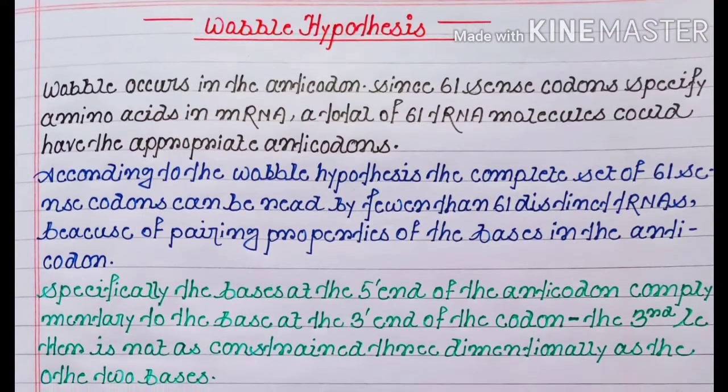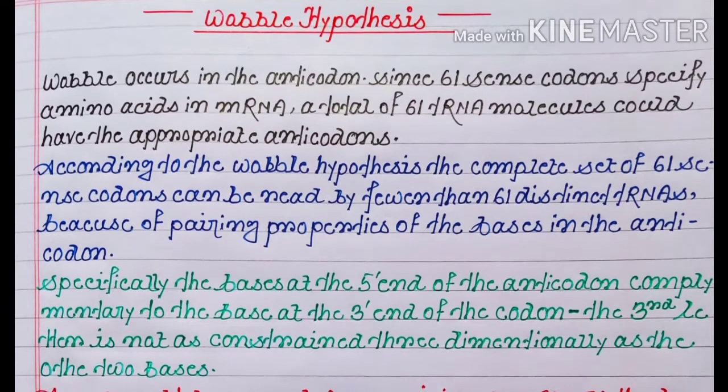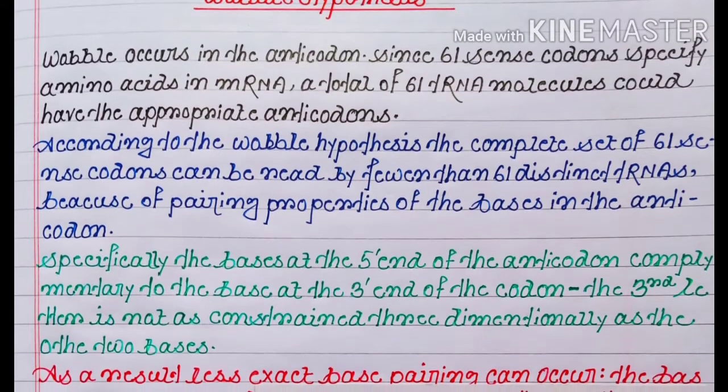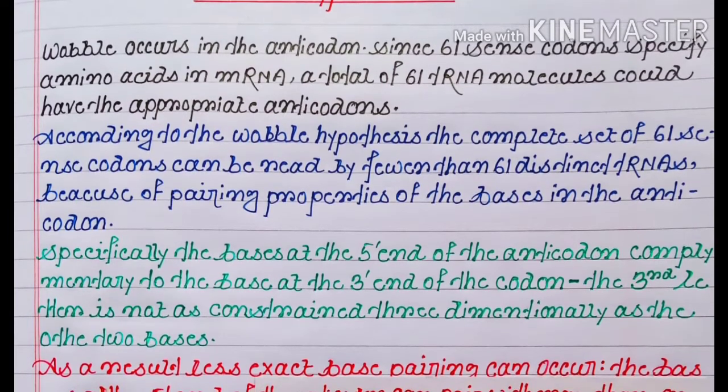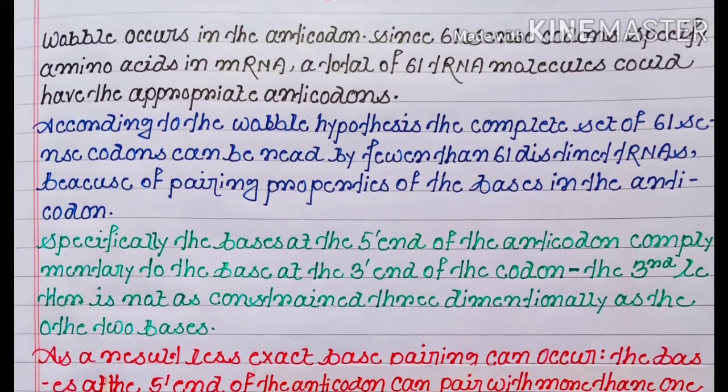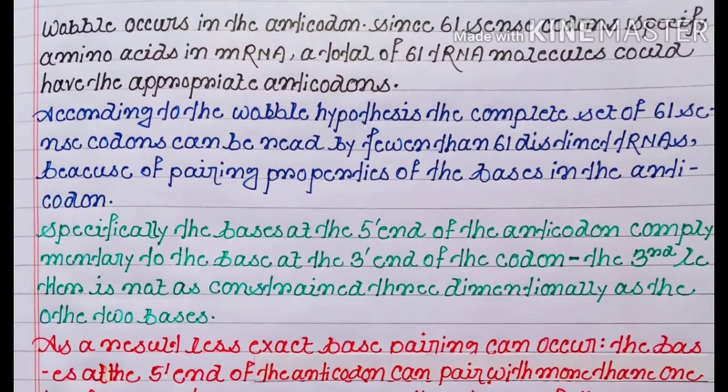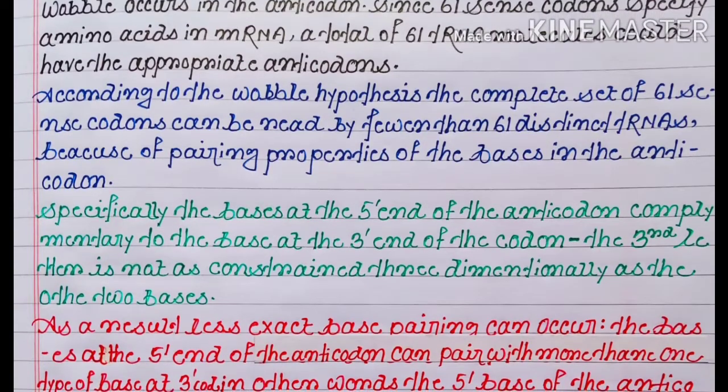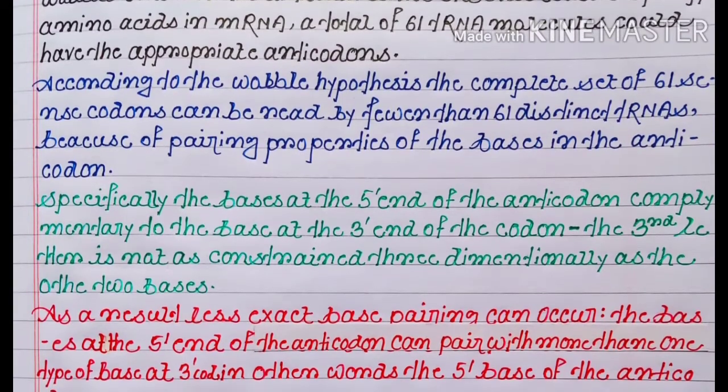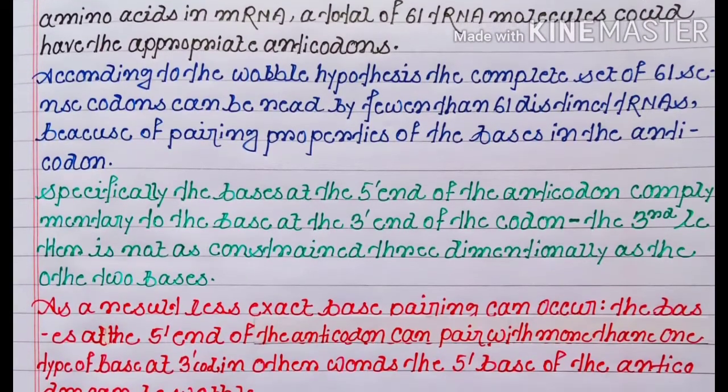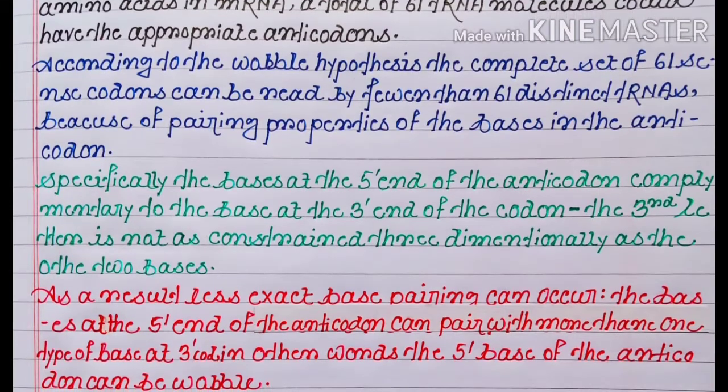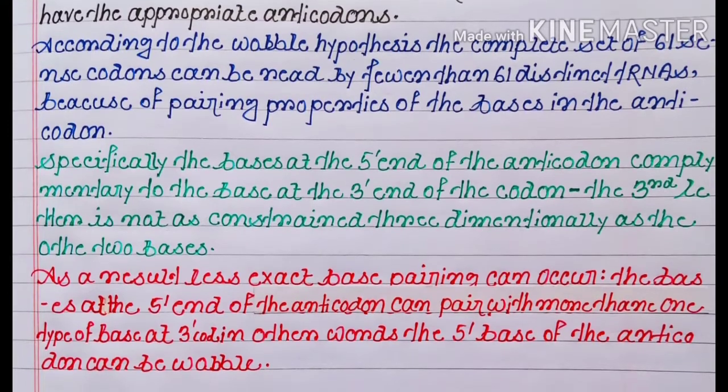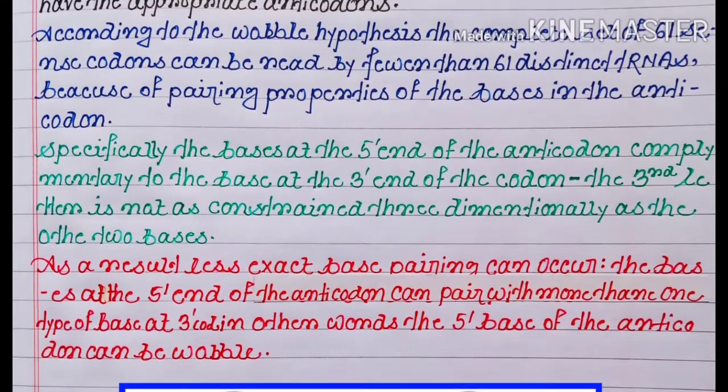Now let's talk about the Wobble hypothesis. So now let's start. Wobble occurs in the anticodon. Since 61 sense codons specify amino acids in mRNA, a total of 61 tRNA molecules could have the appropriate anticodons. According to the Wobble hypothesis, the complete set of 61 sense codons can be reached by fewer than 61 distinct tRNAs.